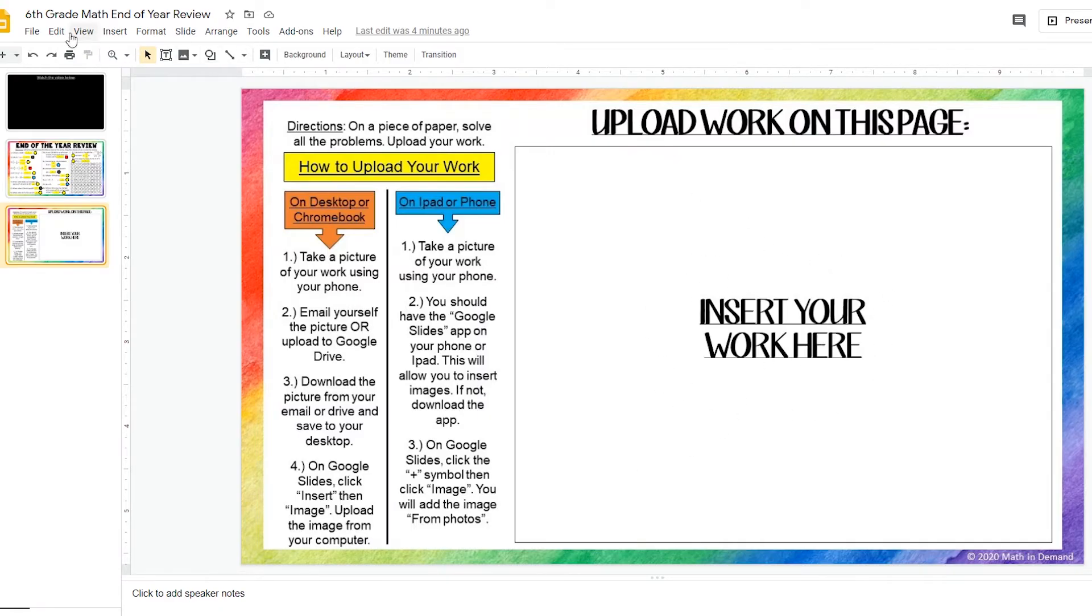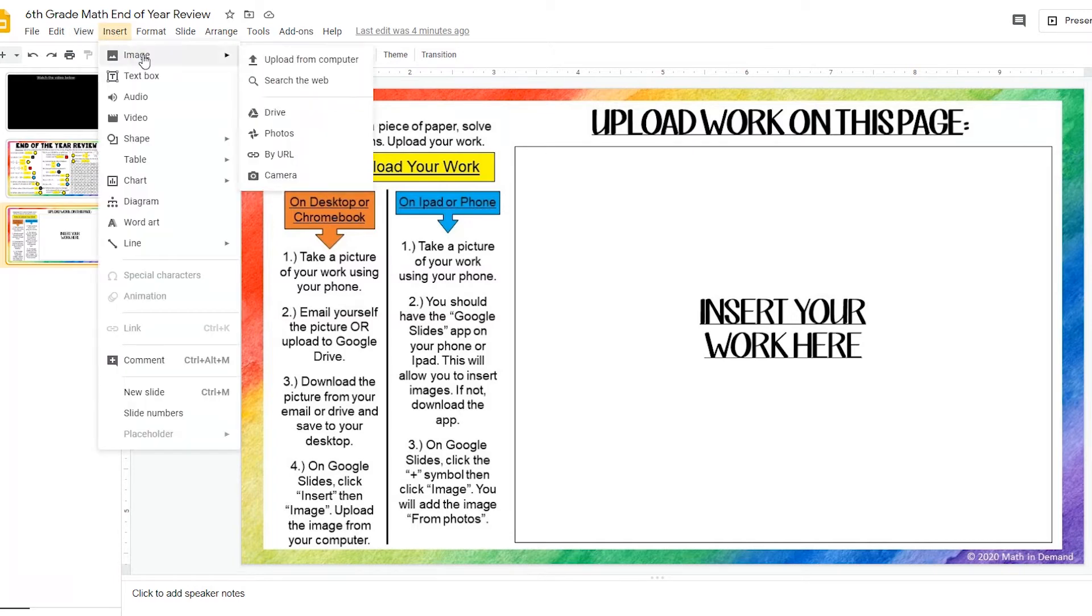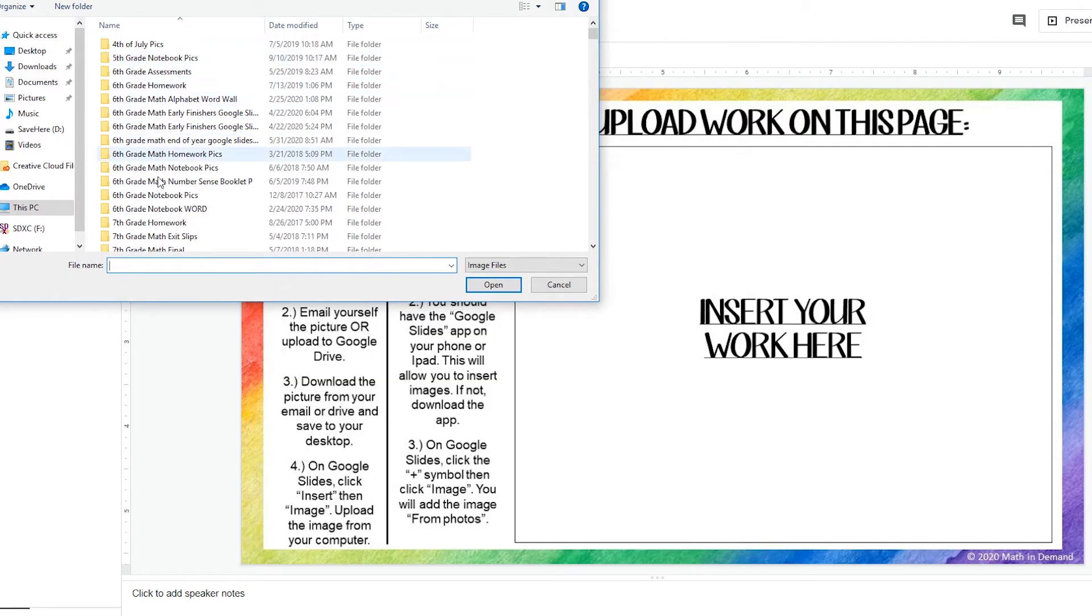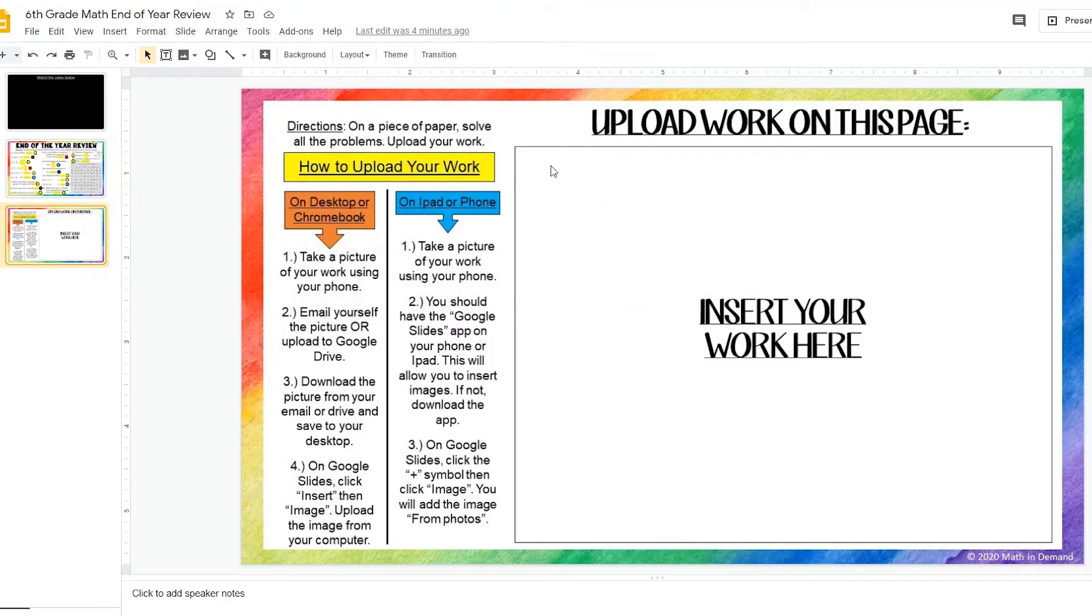So what I would do is I would go to insert, image, and upload from computer. And then wherever you saved it on your computer, you will click on that and you will open. And you will place that image right here.